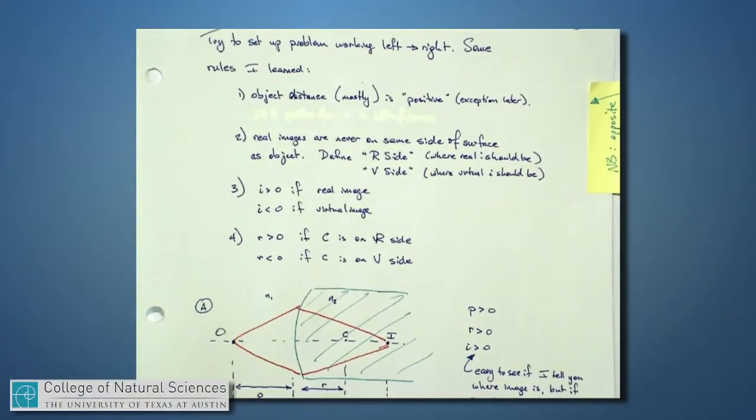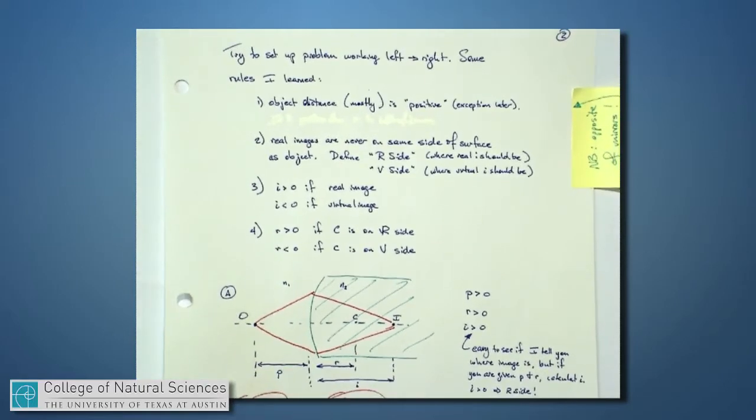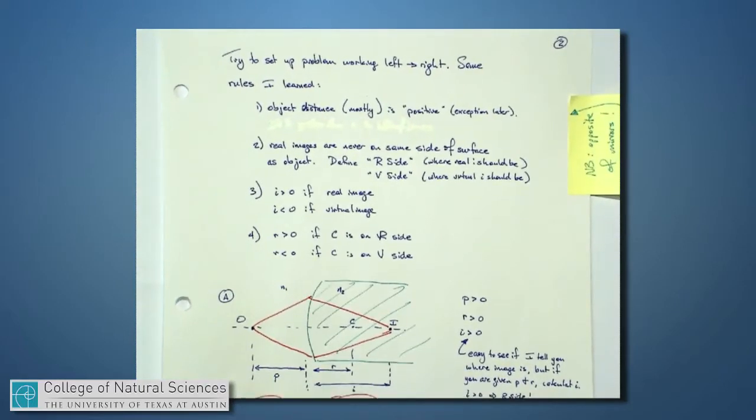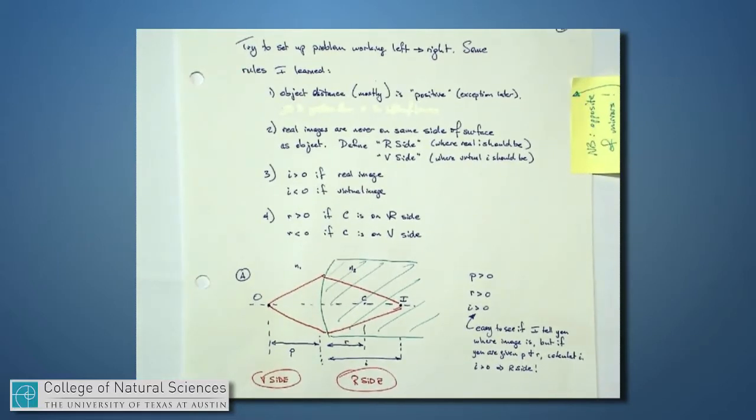I need us to remember a little bit of the tools that we set up when we did mirrors. When we did mirrors, we had some boundary that we were going to consider here, and the boundary was the mirror itself. Now the boundary is the transition from one medium with index n1 to another medium with index n2.